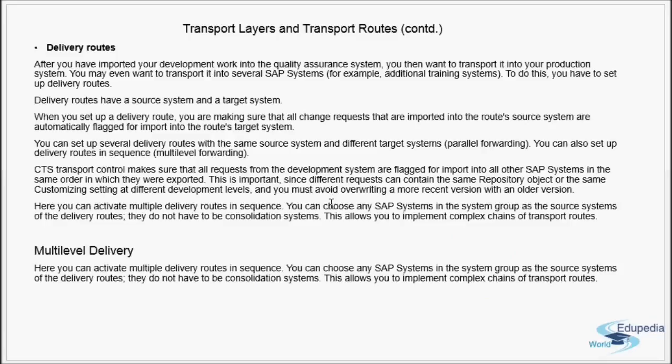The CTS (Change and Transport System) makes sure that all requests from the development systems are flagged for importing to all other SAP systems in the same order in which they were exported. The TMS takes care that the way requests are exported, they are imported into the target system in the same order. When you open the TMS transaction in SAP and check the imports of any system, all imports are sorted by the time they were exported. This is important since different requests can contain the same repository object or the same customizing settings at different development levels.